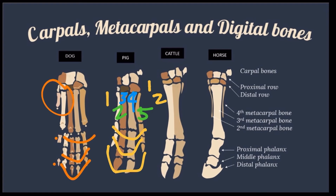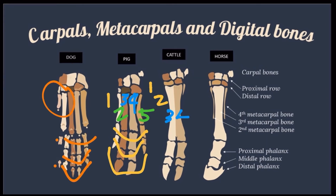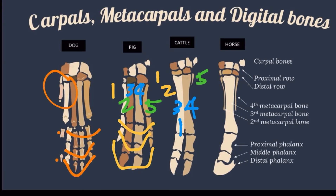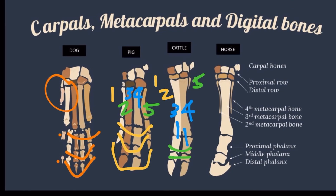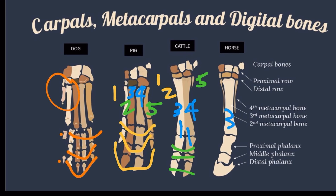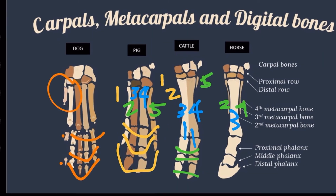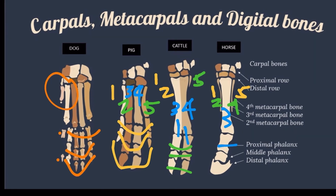In cattle, the first and second metacarpal bones are lacking. The third and fourth are united on the proximal and middle part to form a large metacarpal, but at the distal extremity, each articulates separately with the proximal phalanges. This is the weight-bearing bone, also called the cannon bone. The fifth metacarpal is vestigial, and 3 digital bones are present. In horse, only the third metacarpal is functional, also called the cannon bone. The second and fourth are vestigial, and the first and fifth are missing. There are only 3 digits in the horse: the long pastern or proximal, the short pastern or middle, and the coffin bone or distal.